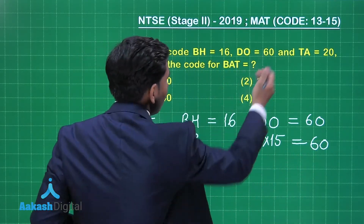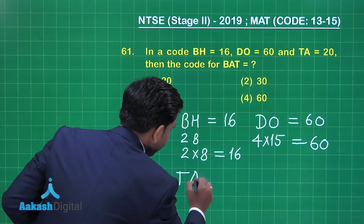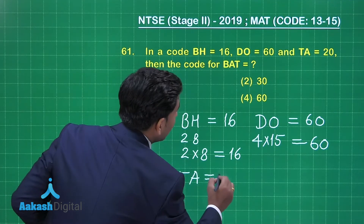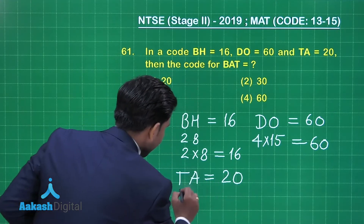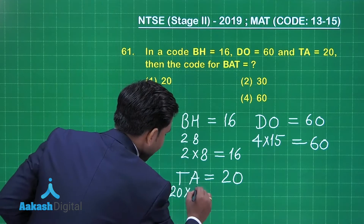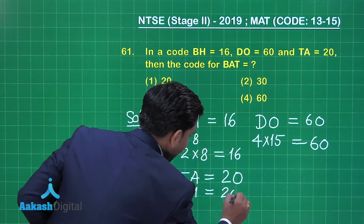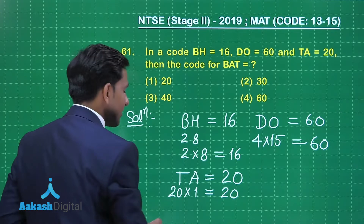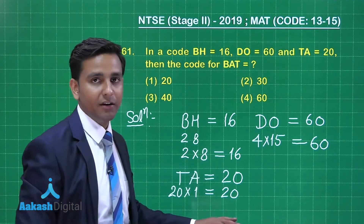This pattern is also applicable for TA, which is equal to 20. The position of letter T in the English alphabet is 20 and A is at the 1st position. The product of the positions of these two letters is 20.